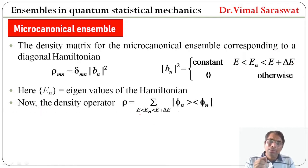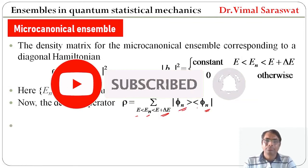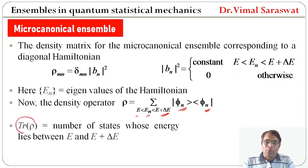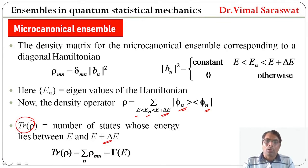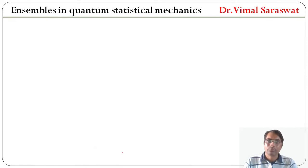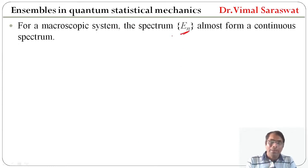The density operator rho equals sigma over states where E is less than E_n is less than E plus delta E. The trace of rho is the number of states whose energy lies between E and E plus delta E. Also, trace of rho equals sigma_n rho_mn, which equals gamma(E, E+delta E), denoted omega(E) times delta E. For a macroscopic system, the spectrum E_n almost forms a continuous spectrum, not a discrete spectrum.